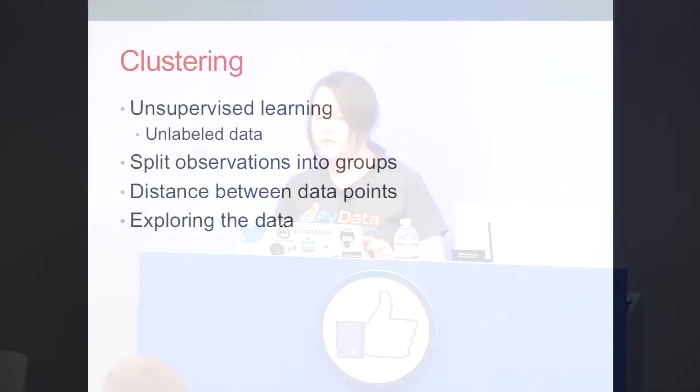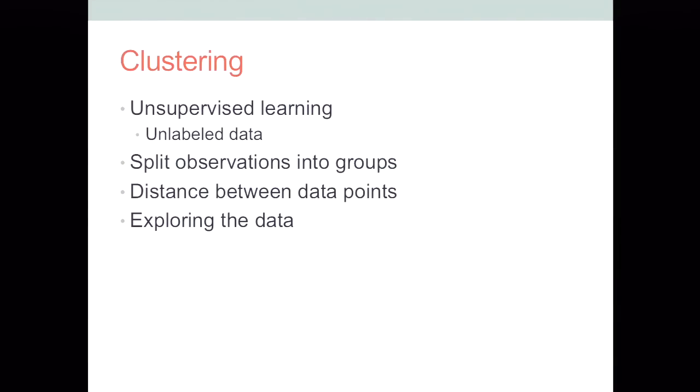So just to review, clustering is a form of unsupervised machine learning. And it's useful for when your data is unlabeled and you don't know what you're looking for. The way that clustering works is it splits observations into groups so that observations in the same group are more similar to each other than they are to those in other groups. And this is done by some sort of distance metric, like the Euclidean metric or the Manhattan distance metric. And clustering is really useful for exploring your data, especially if you don't know what you're looking for.